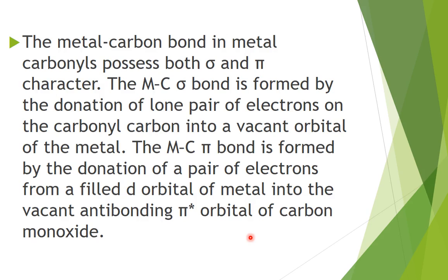Bonding in metal carbonyls is very important. The metal-carbon bond in metal carbonyls possesses both sigma and pi character. The sigma bond is formed by donation of a lone pair of electrons from the carbonyl carbon into a vacant orbital of the metal. The pi bond is formed by donation of a pair of electrons from the filled d orbital of the metal to a vacant anti-bonding pi-star orbital of CO.